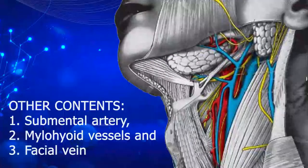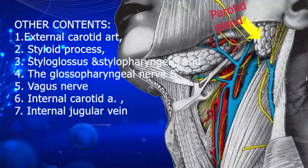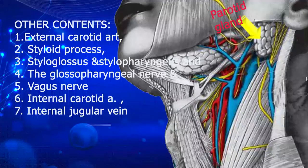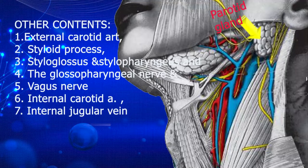In the posterior part, we will see the parotid gland and other structures such as the external carotid artery, the styloid process, vagus nerve, internal carotid artery, internal jugular vein and some muscles that are a little more deeply placed, like the styloglossus and stylopharyngeus.